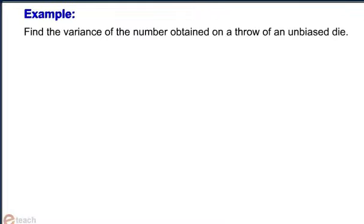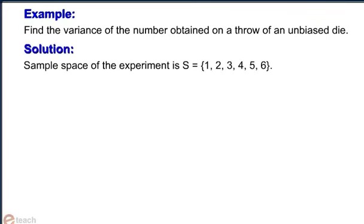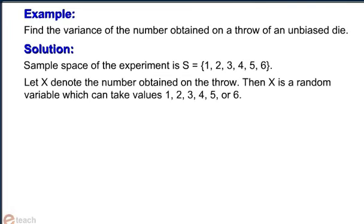Example: Find the variance of the number obtained on a throw of an unbiased die. Solution: The sample space S contains 1, 2, 3, 4, 5, and 6. Let x denote the number obtained on the throw. Then x is a random variable which can take any value from 1 to 6, and the probability of any value is 1 by 6.